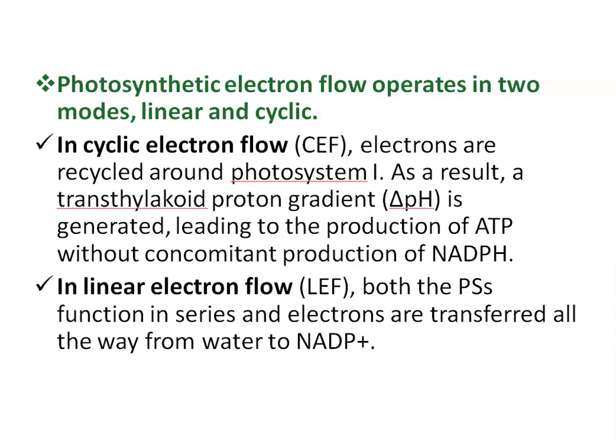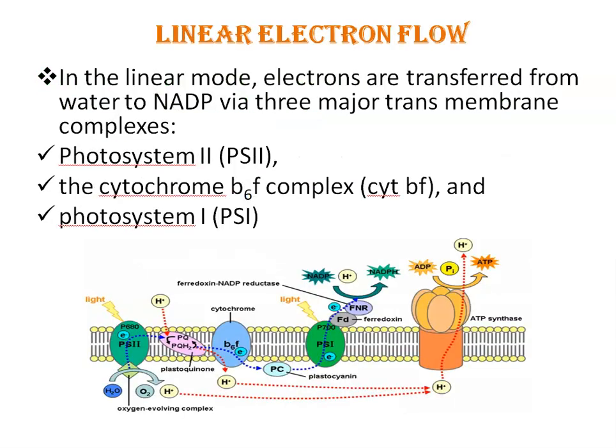Photosynthetic electron flow operates in two modes: linear and cyclic. In cyclic electron flow, electrons are recycled around photosystem I. As a result, a trans-thylakoid proton gradient is generated, leading to the production of ATP without the production of NADPH, thus increasing the ATP-to-NADPH ratio within the chloroplast. In linear electron flow, both photosystems function in series and electrons are transferred all the way from water to NADP+, with the production of both NADPH and ATP. First we will discuss linear electron flow.